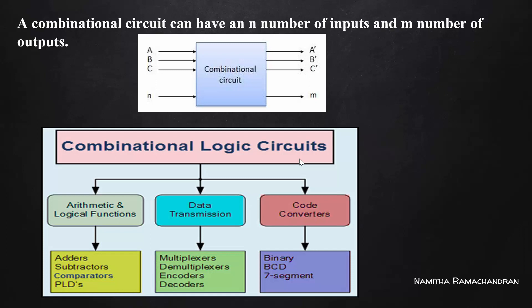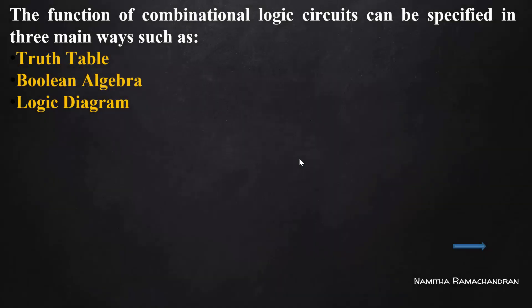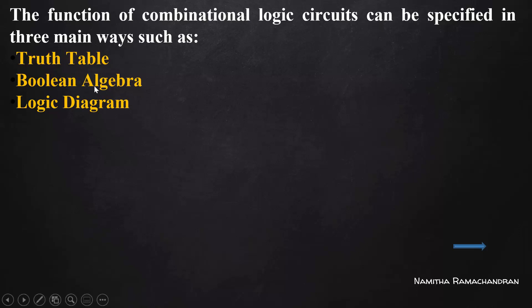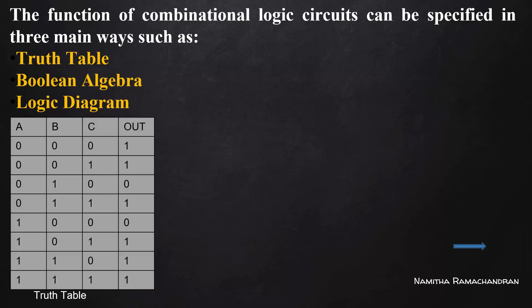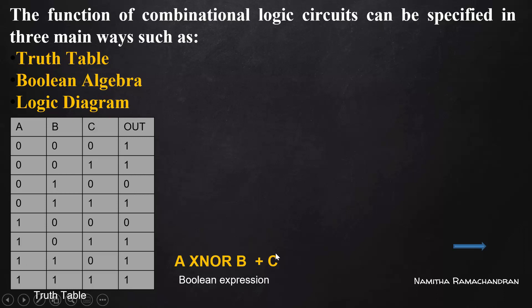The function of a combinational logic circuit can be specified in three different ways: using a truth table, using a boolean algebra expression, and using a logic diagram of the circuit. The truth table expresses the functionality of a combinational digital circuit, and from it we can generate a corresponding boolean expression.